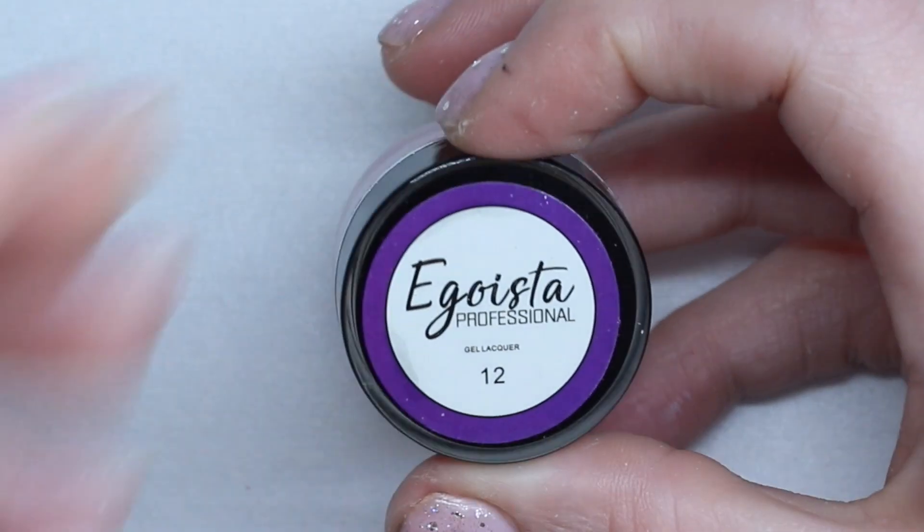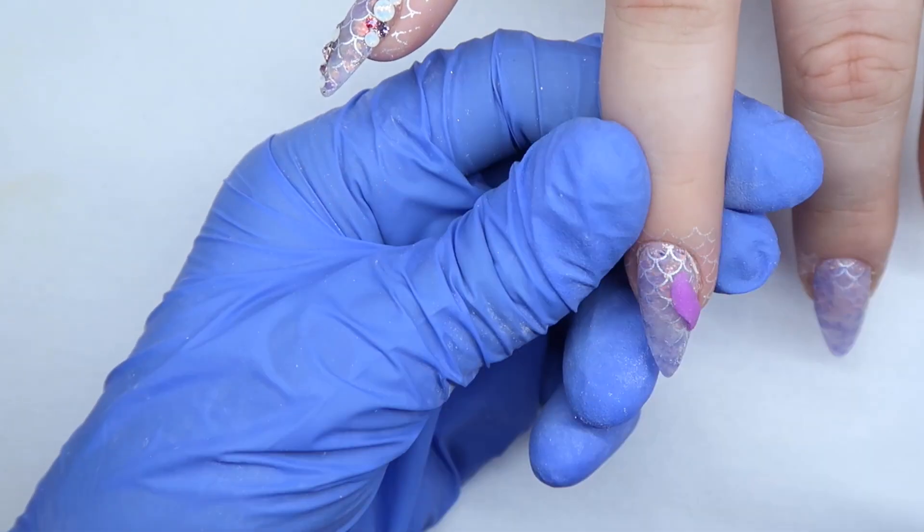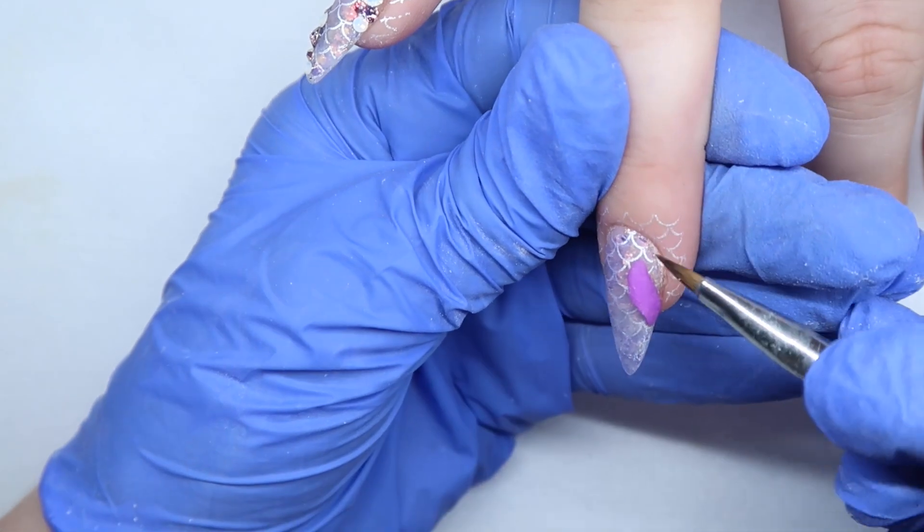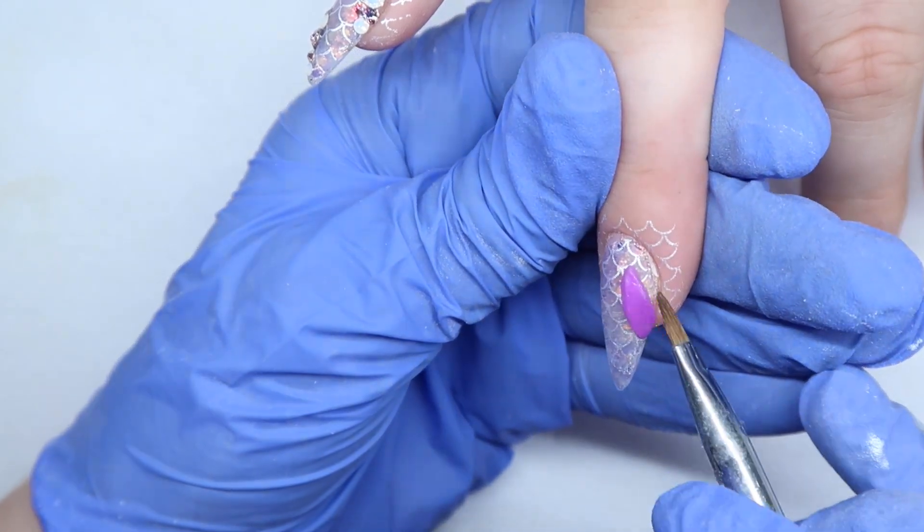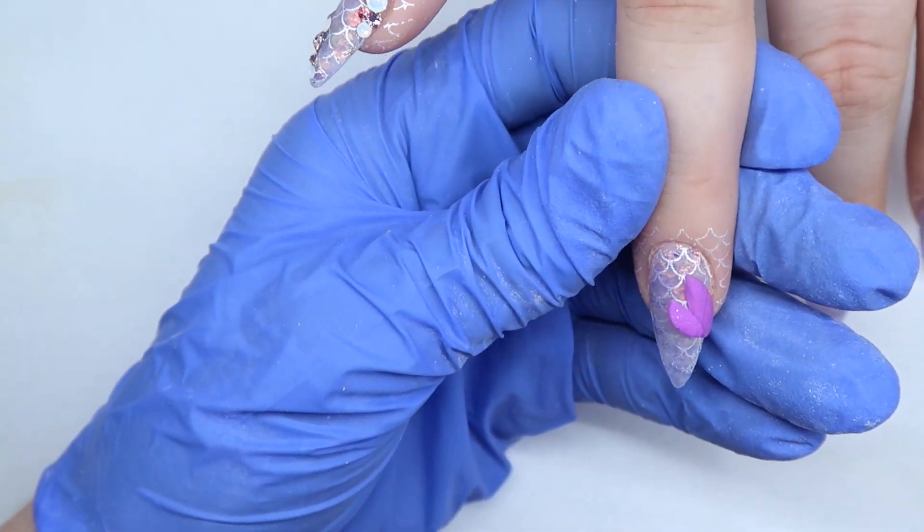So now I'm coming in with Egoista number 12. This is their 4D Gels. And I'm using the purple color. And I'm going to create a little starfish. So I found that it actually was a little bit harder to get it to stick to this nail while it's dry, but it's a little bit easier if you have a top coat already on.